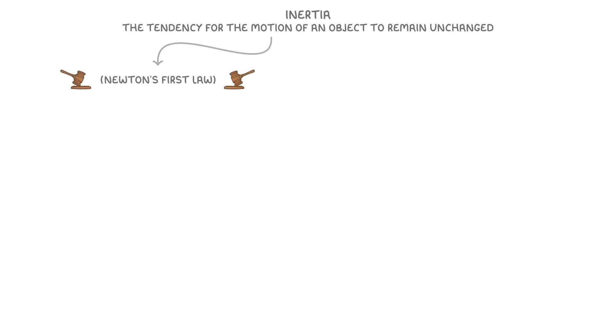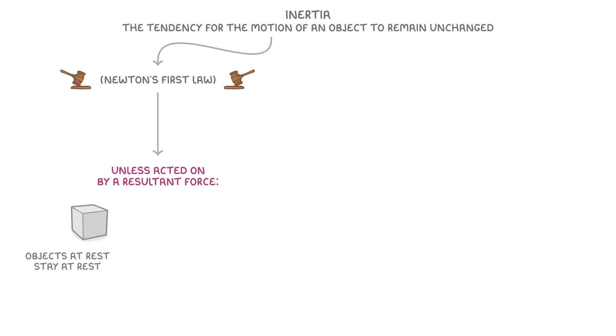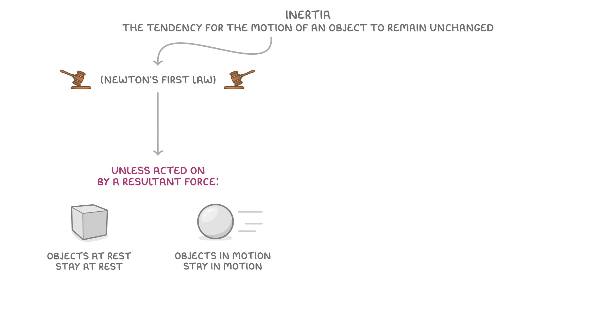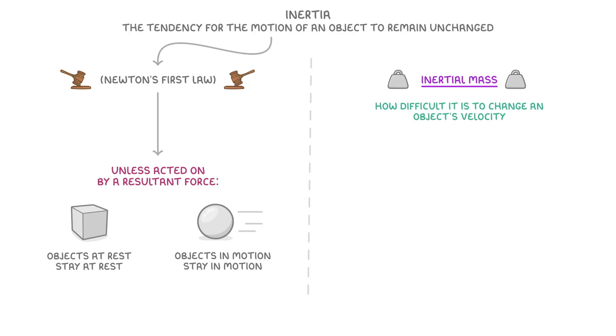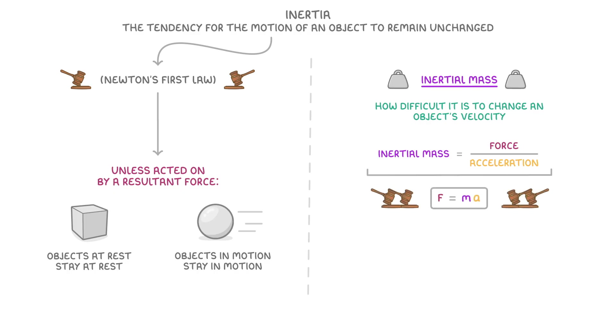The last thing we need to cover is the idea of inertia, which is the tendency for the motion of an object to remain unchanged. It's basically just Newton's first law, namely that unless acted on by a resultant force, objects at rest will stay at rest, and objects in motion will stay in motion. Meanwhile, an object's inertial mass measures how difficult it is to change an object's velocity, and we find it by dividing force by acceleration, which is just the equation from Newton's second law again.